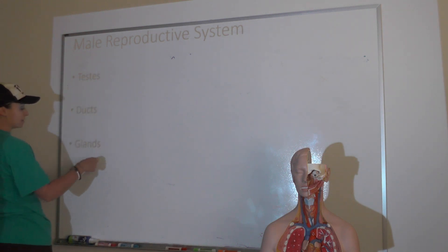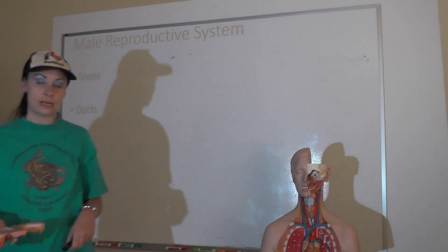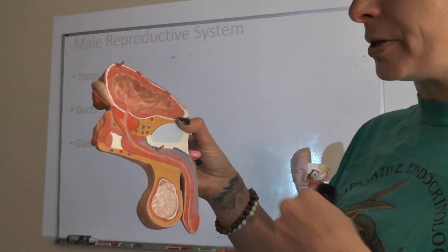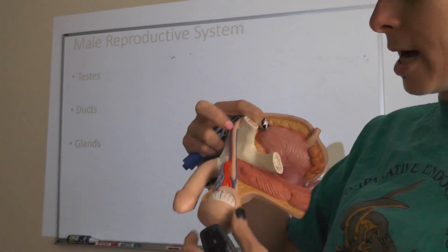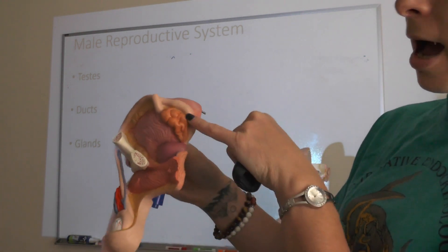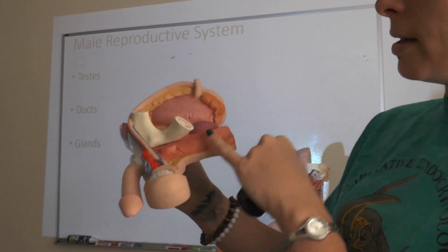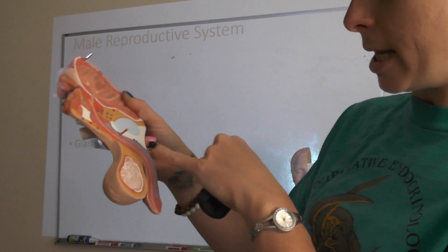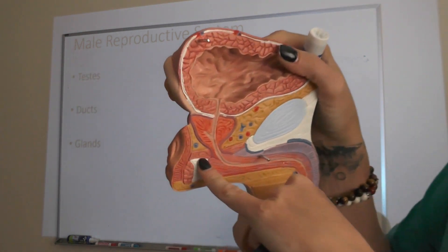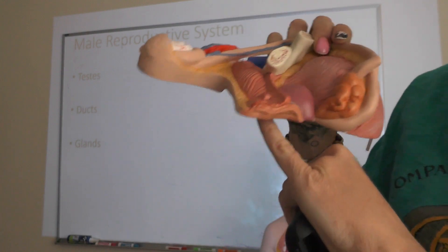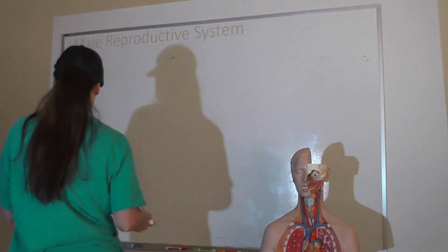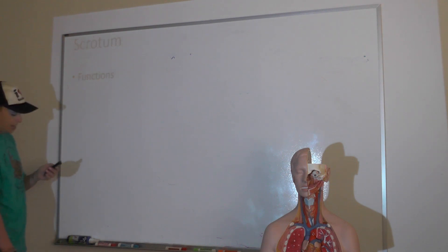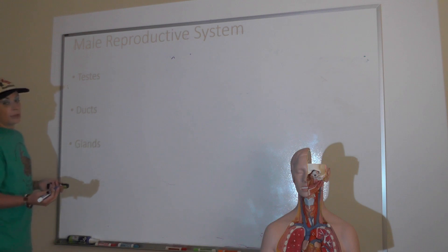We also have accessory glands that produce secretions added to sperm to make up semen. Inside the testes is where sperm are produced; they then enter the duct system and meet the first gland, the seminal vesicle. The prostate surrounds the urethra, and the bulbourethral gland is also present. We'll talk more about all of those as we move throughout the lecture, and you'll see all of them again in lab.